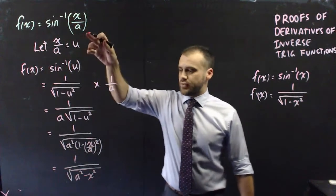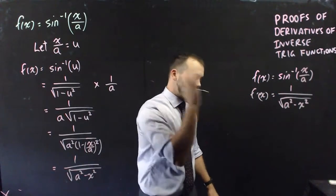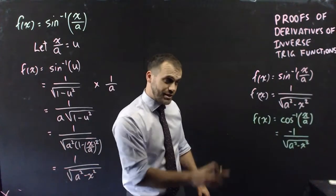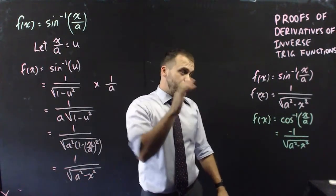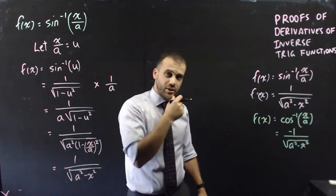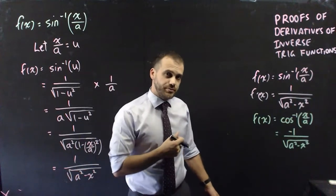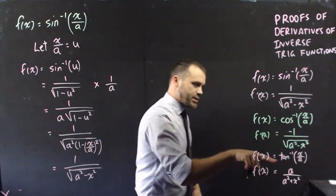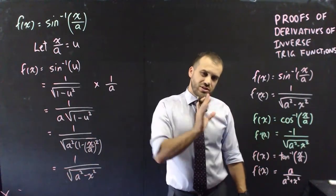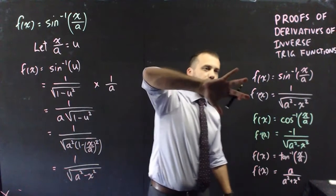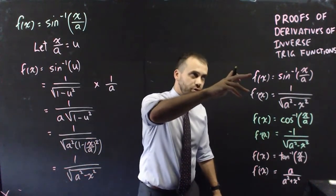The derivative of inverse sine of x/a is equal to 1 over √(a² − x²). This has more utility and you'll find it on a formula sheet. For inverse cosine, the result is identical except you have a negative 1 out the front — you can prove it the same way, and the negative comes from the derivative of cosine being negative sine. For inverse tan, f(x) = arctan(x/a) has derivative a over (a² + x²). You can use similar techniques to prove that. And that's the proof of our derivatives of inverse trig functions.